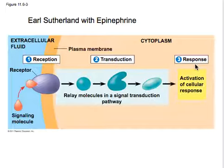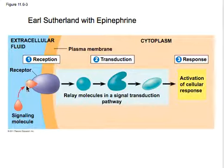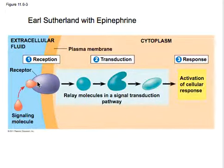The reception is: there's a signal outside of the cell, and there's a receptor protein in the cell membrane that binds to it. This is called the receptor, and this is called the ligand, or the signal. Once that binding happens, reception is complete.